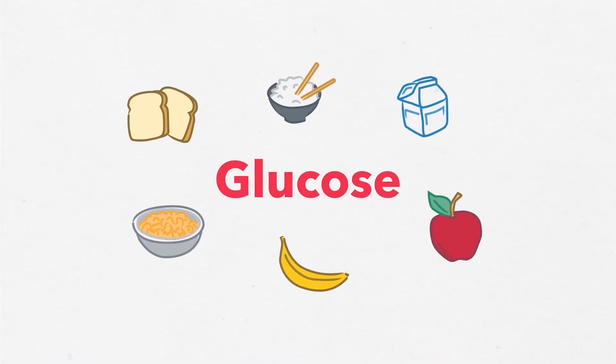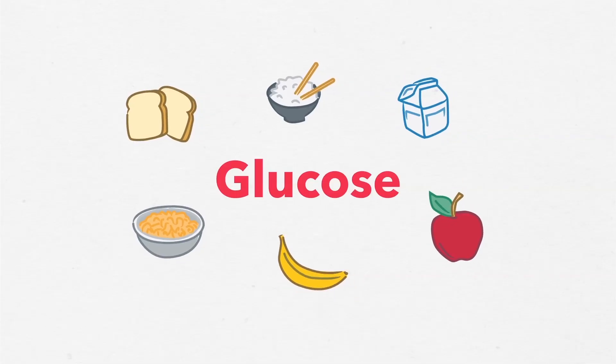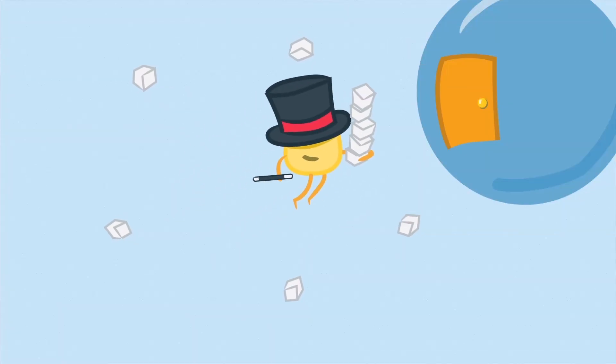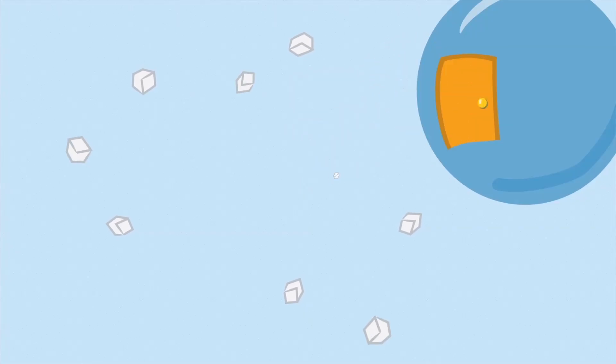Glucose comes from many of the foods we eat, like bread, rice, pasta, milk and fruit. Your cells rely on insulin to help convert glucose into energy. Without it, glucose builds up in your blood instead of being used by your cells and is usually released through urine.